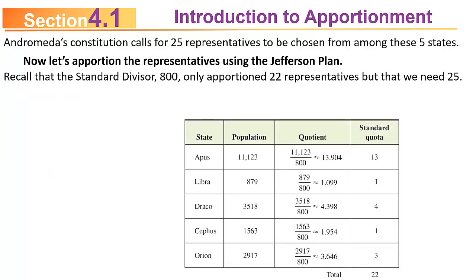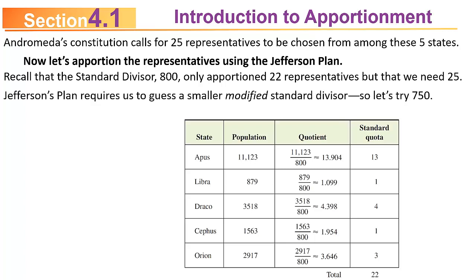The standard divisor is 800, but it only apportioned 22 representatives when we need 25. The Jefferson plan says to guess a modified standard divisor smaller than 800. Trying 750: Apis gives 14.831 (rounds to 14), Libra gives 1.172 (rounds to 1), Draco gives 4.691 (rounds to 4), Cephas gives 2.084 (rounds to 2), and Orion gives 3.889 (rounds to 3). That only apportions 24 seats, so we need to go smaller.